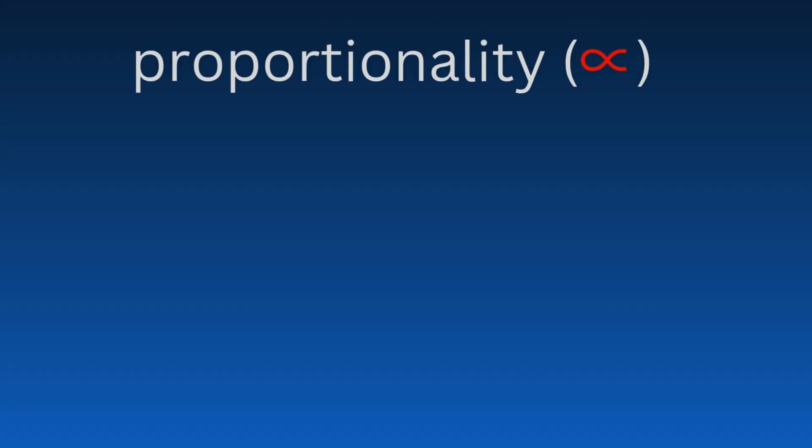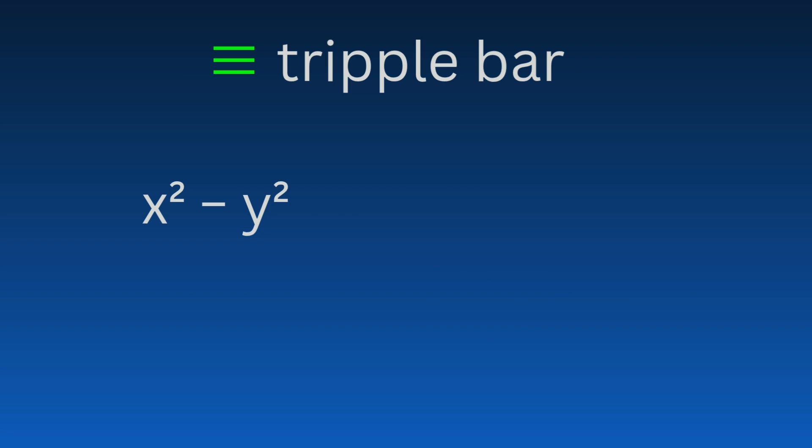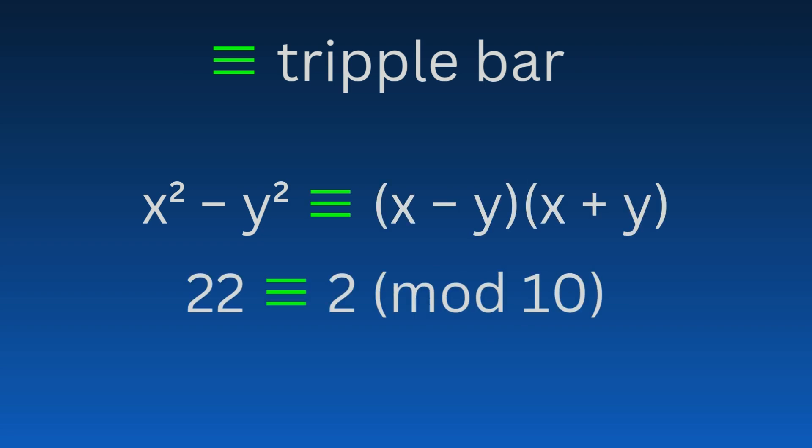This other symbol, which looks like an unfinished infinity sign, is also used to show proportionality. The triple bar, or equivalent sign, is sometimes used to show an identity, but more commonly it's used to indicate congruence in modular arithmetic.